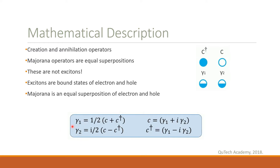Now, it is important to note that these are not excitons. Excitons are bound states of electrons and holes, while Majorana fermions are equal superpositions of electrons and holes. Majorana fermions always come in pairs, and they are distinguishable.